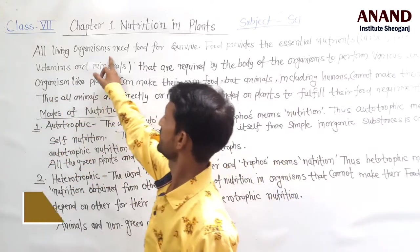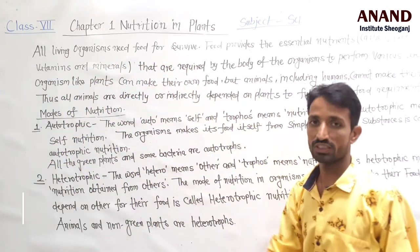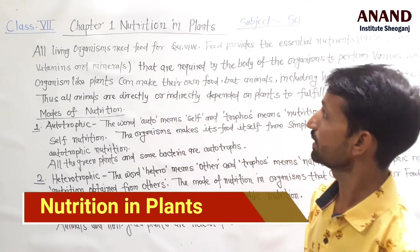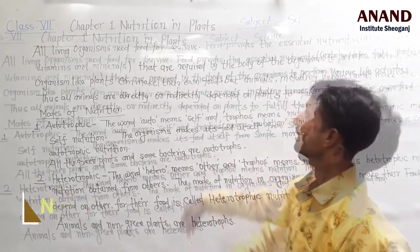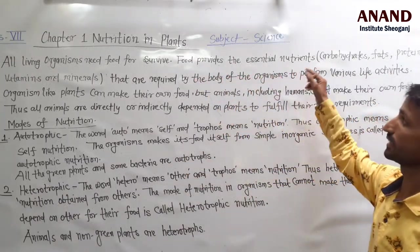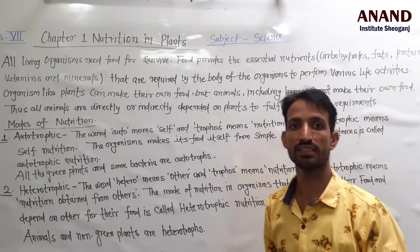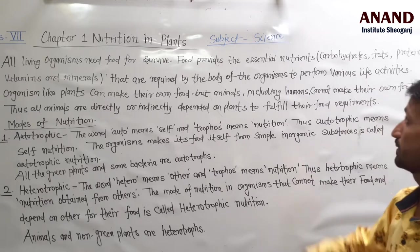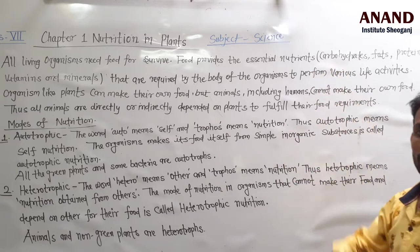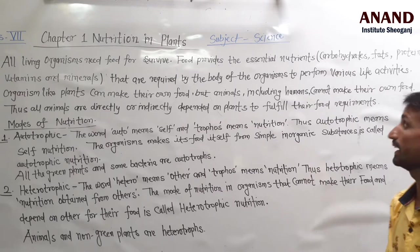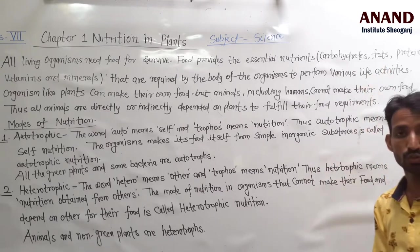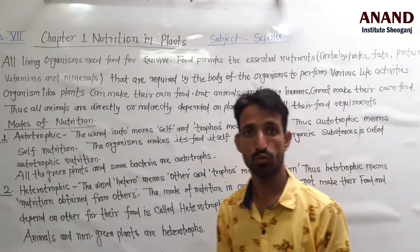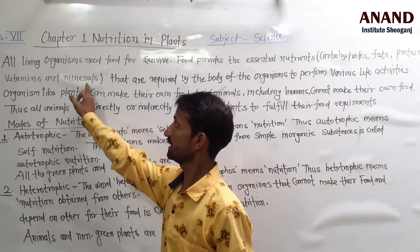All living organisms need food for survival. Food provides the essential nutrients. The main types of essential nutrients are carbohydrates, proteins, vitamins, and minerals.